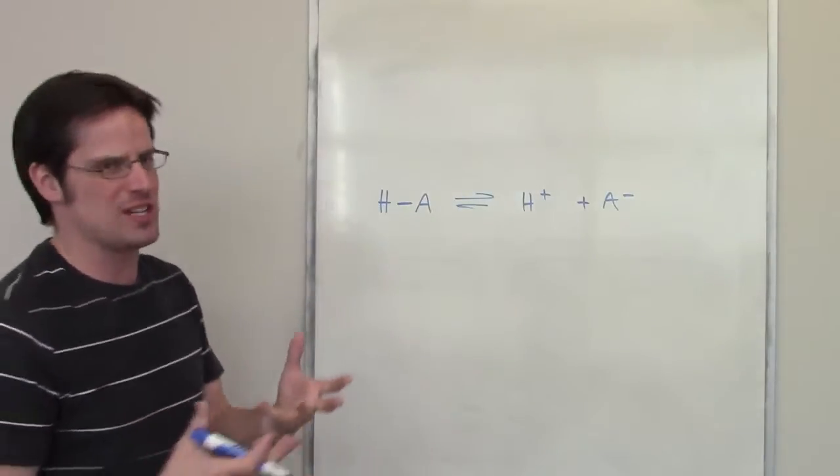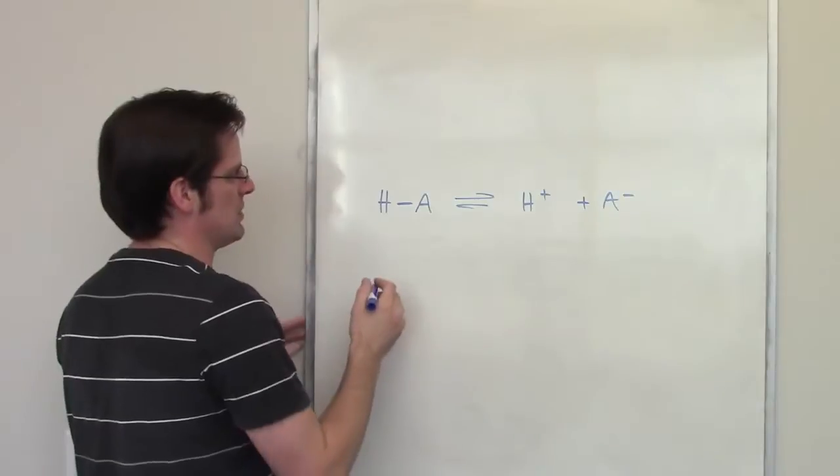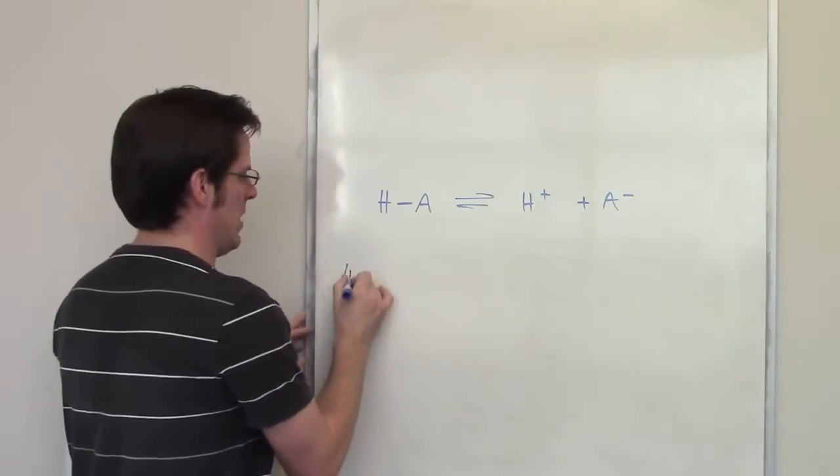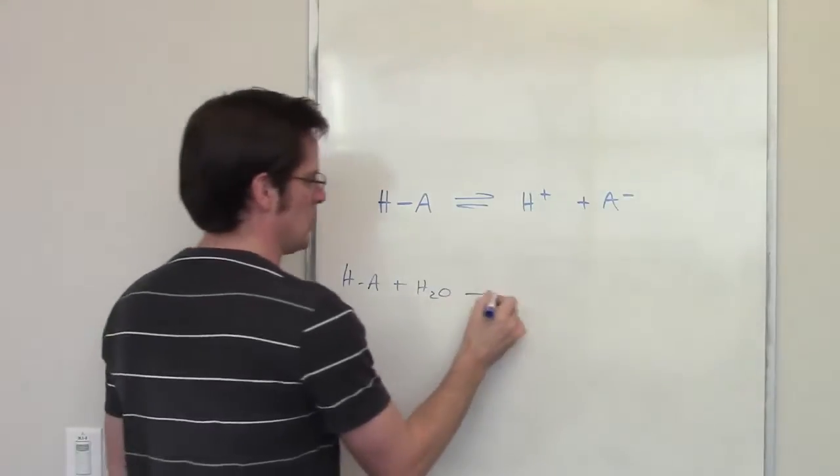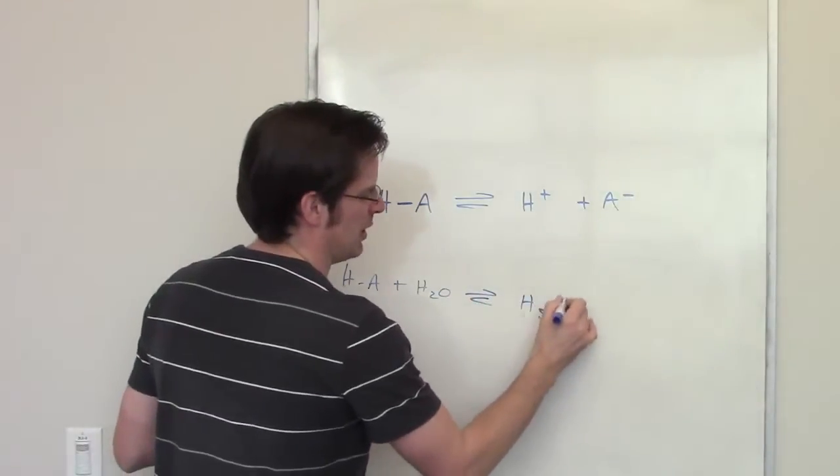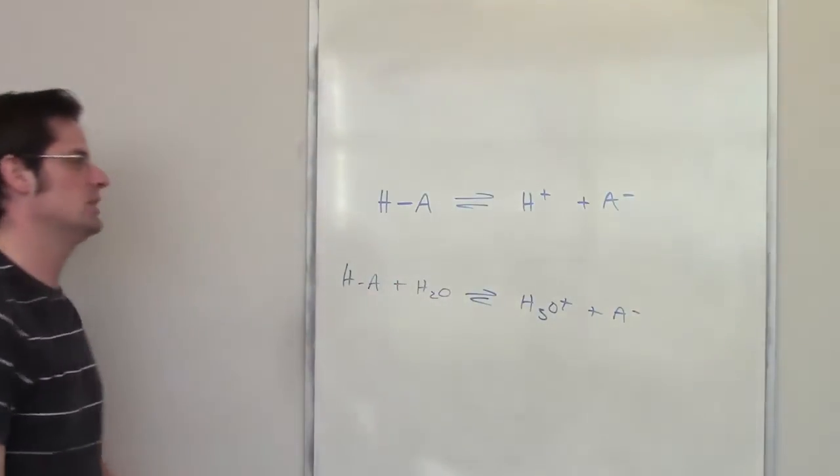Now, of course, you should understand that this is sort of a lazy way of writing this. In a real equilibrium setting, if I've got water lying around, this HA donates a proton to this H2O to form H3O+, hydronium, and releases A-, its conjugate base.